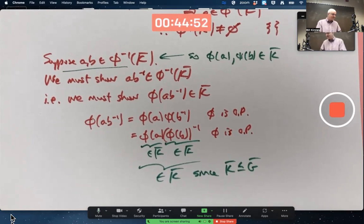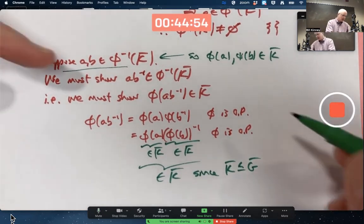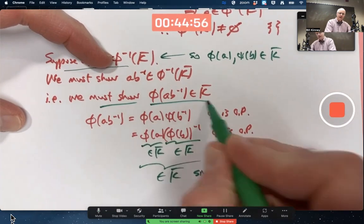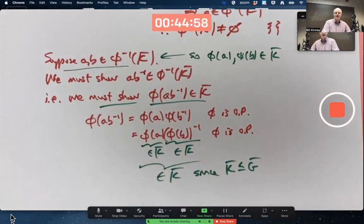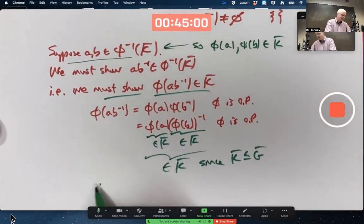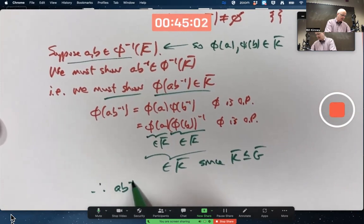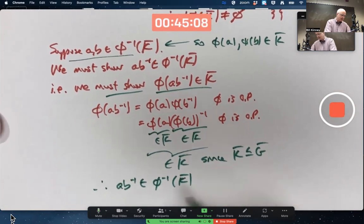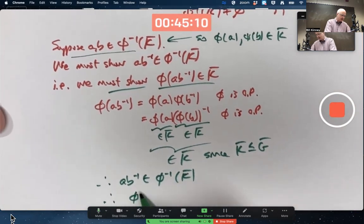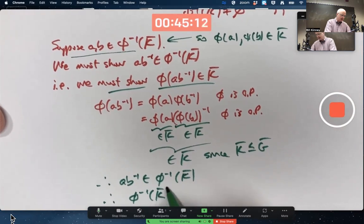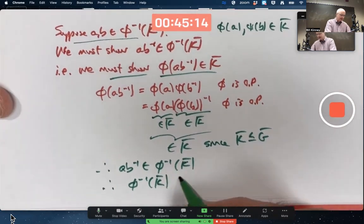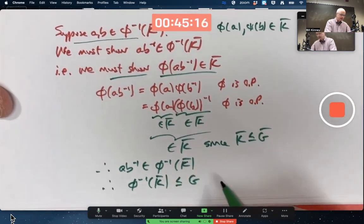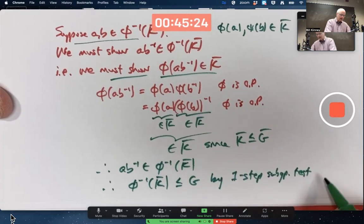We showed what we wanted to show. Therefore, A, B inverse is in here. Therefore, this preimage of K bar under φ is a subgroup of G by the one-step subgroup test. Okay? Praise the Lord. Thank you.